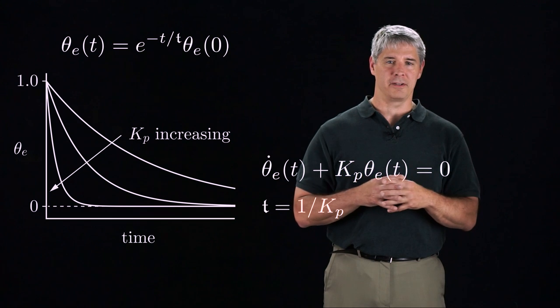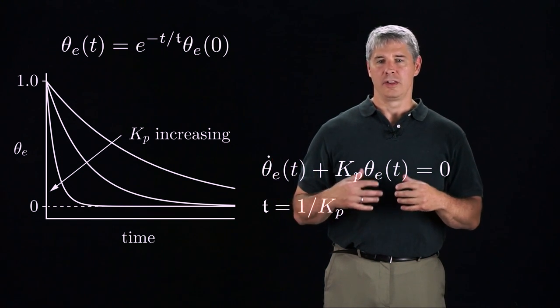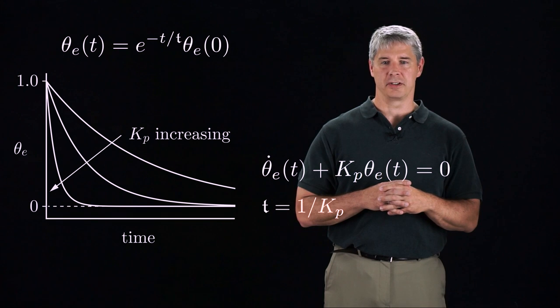This can be written in our standard first-order form with a time constant of 1 over kp. The unit step error response is shown here. The larger kp, the faster the error converges to 0.